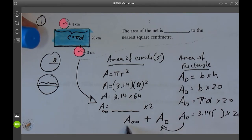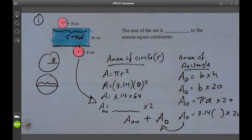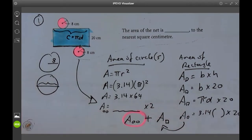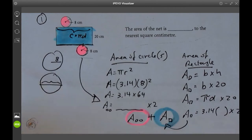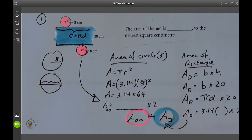So we say area of two circles, that's the pink, plus the area of the blue, the rectangle. Add those together and you're going to get the area that you want as your answer.